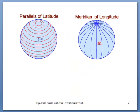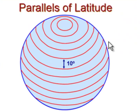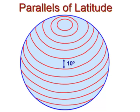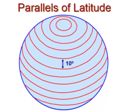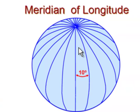We'll also be using the terms parallels and meridians. Parallels are east-west lines and they're parallel to each other, as opposed to meridians, which all converge at the North or South Pole. As an example, we'll make some parallels and meridians around Alaska.